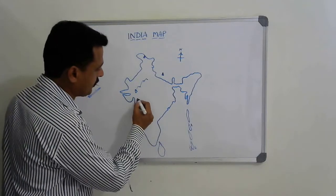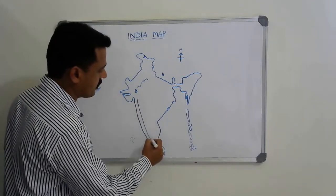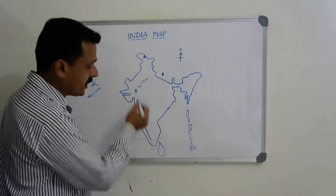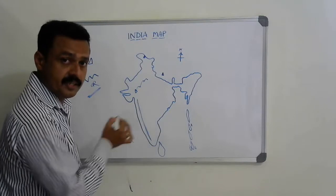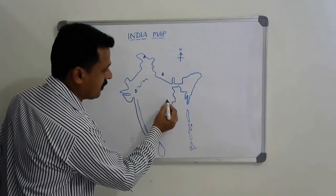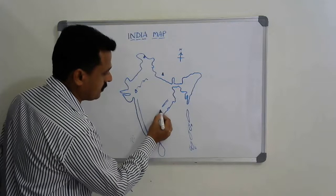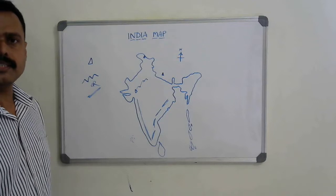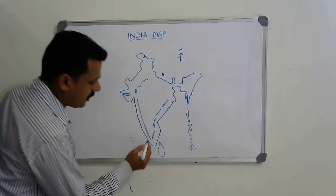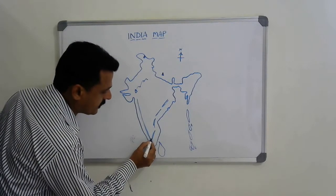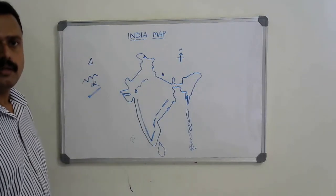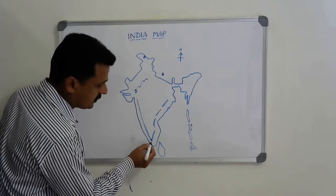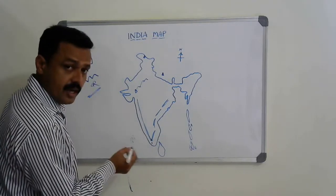The Western Ghats come here — just shade this area. It is continuous, remember. The Eastern Ghats are not continuous — they are away from the sea. These two mountain ranges join at the Nilgiri Hills here, so draw them joining at Nilgiris.